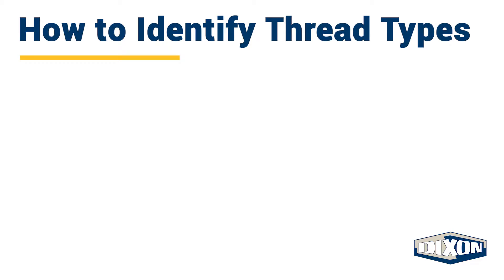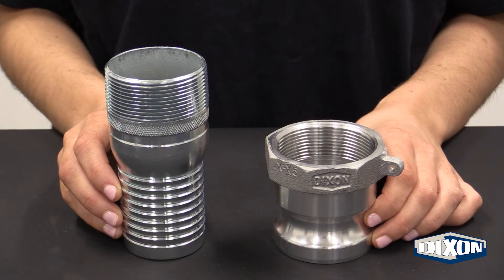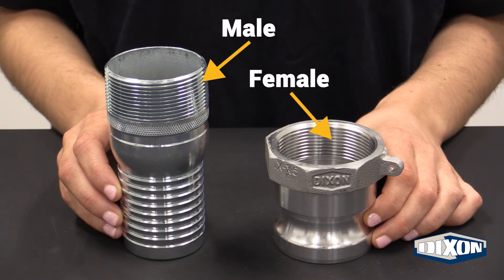There are four steps to identifying thread types. Step 1: Is the thread male or female? If the threads are on the outside of the fitting, it's a male thread. If they are on the inside, it's a female thread.